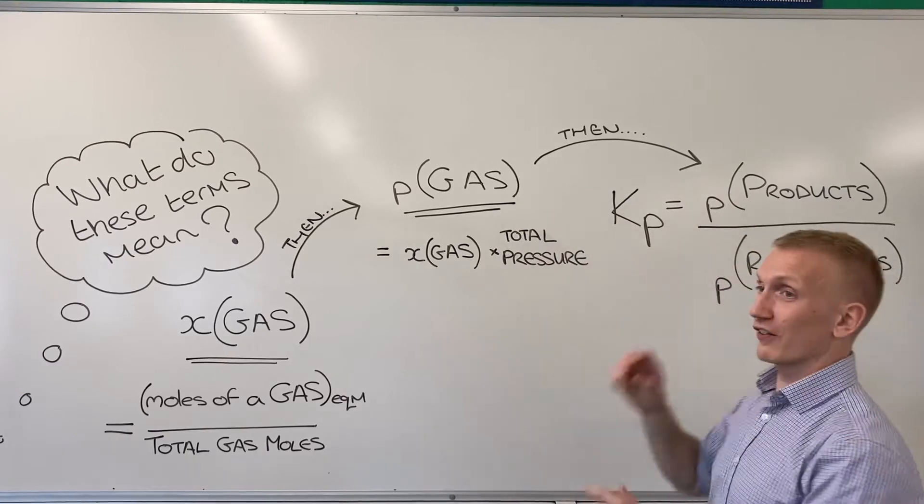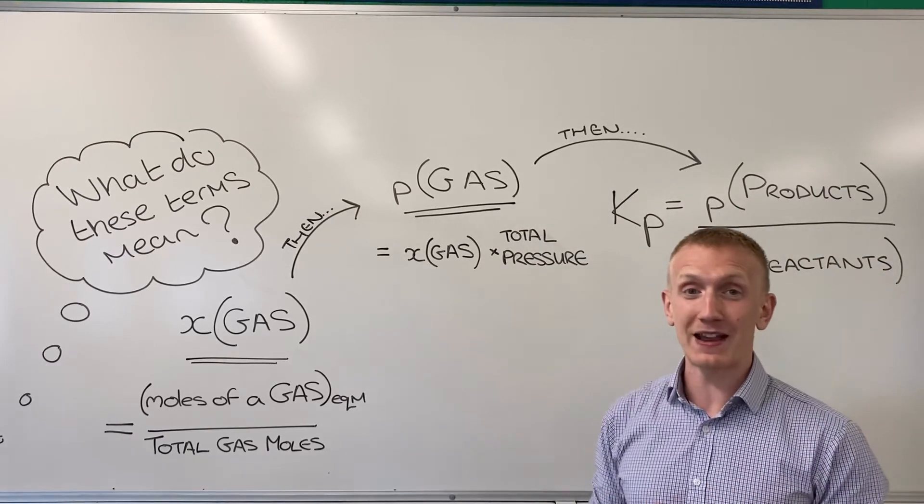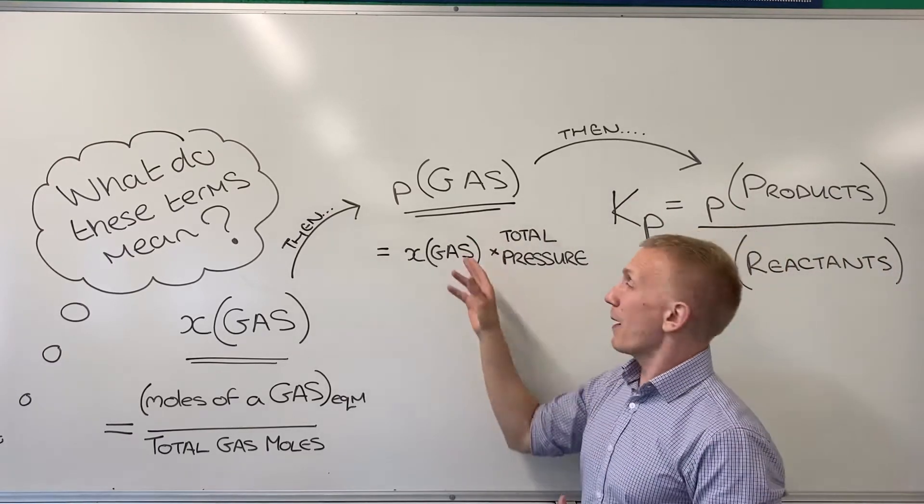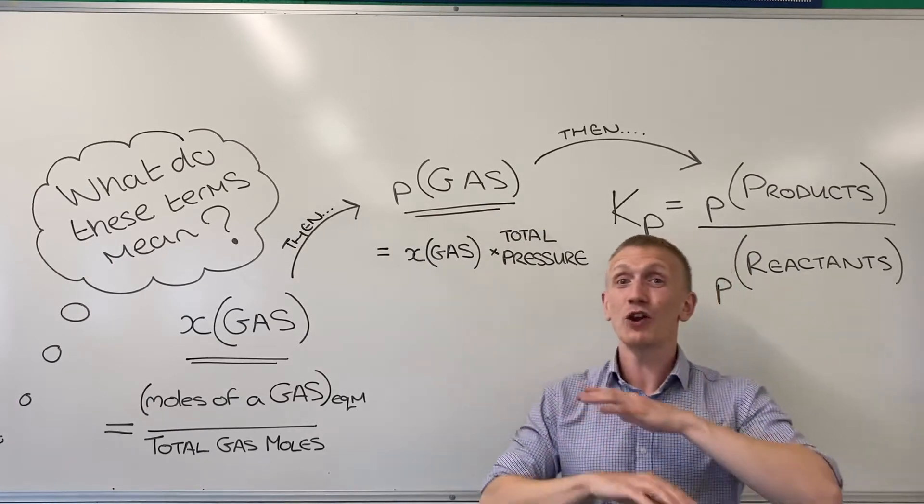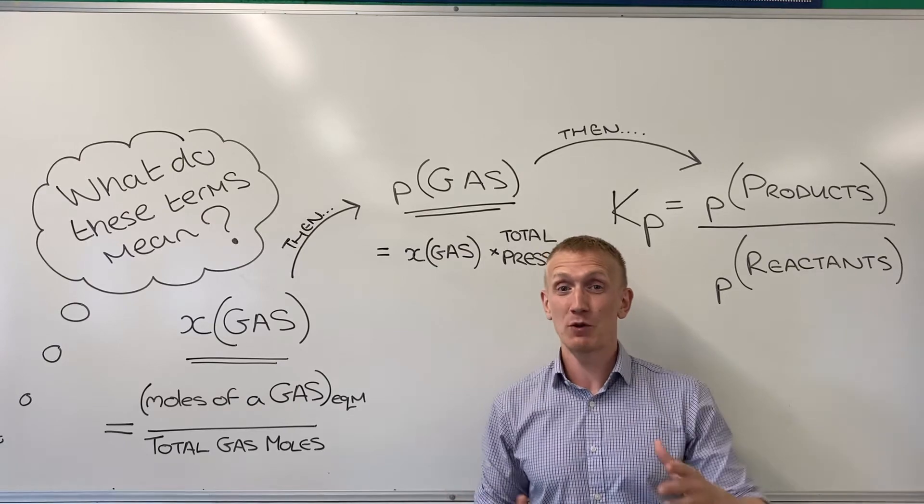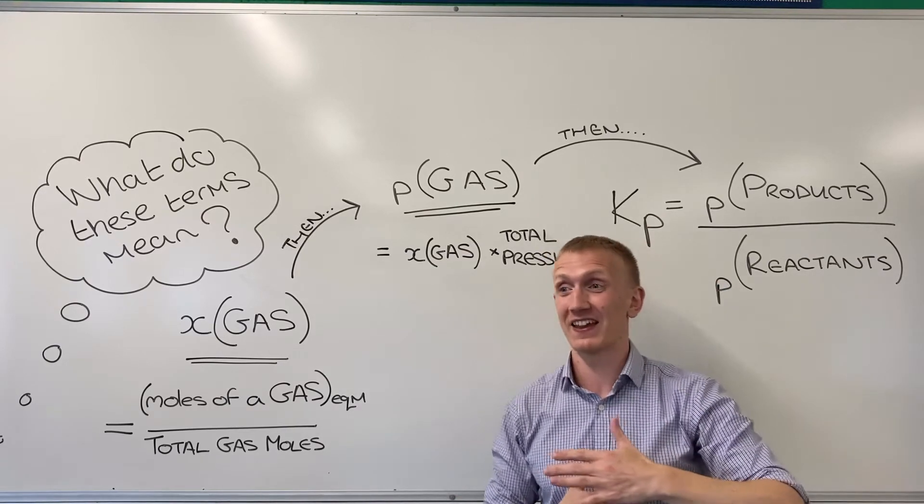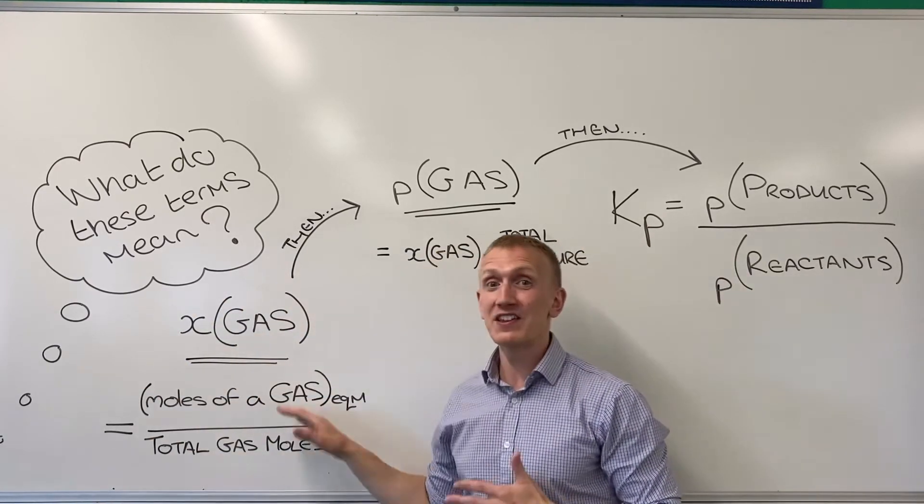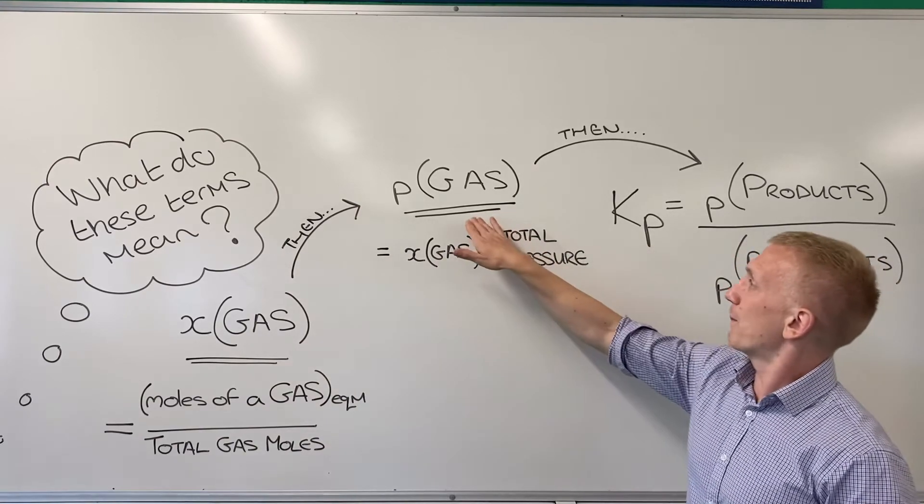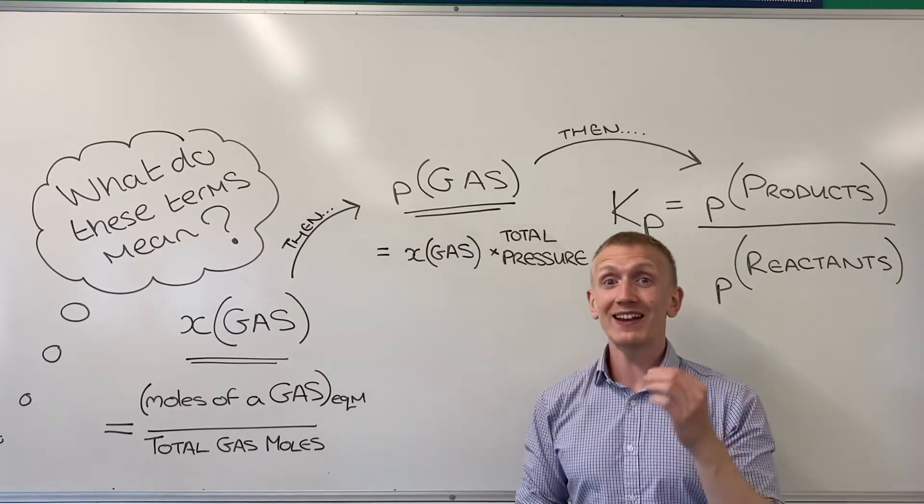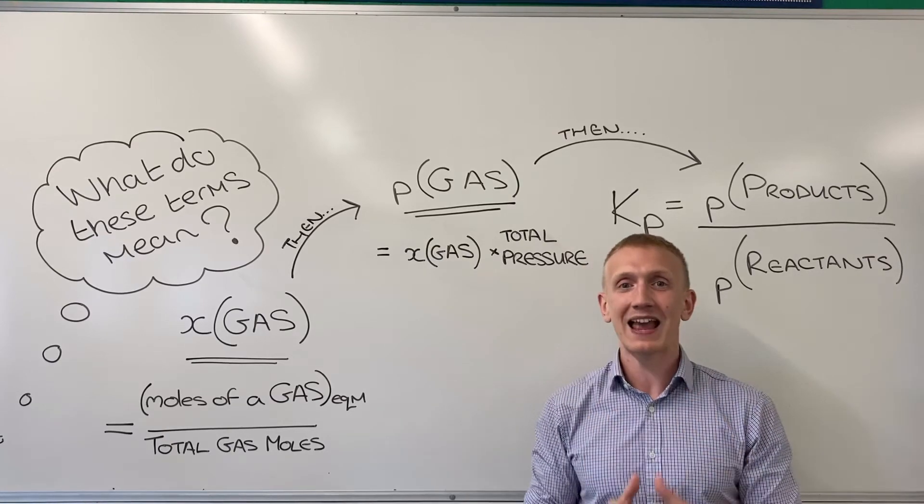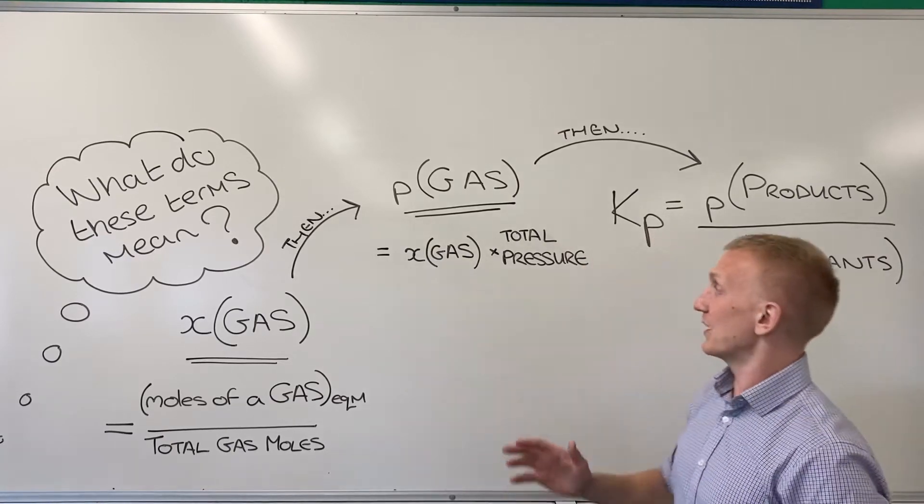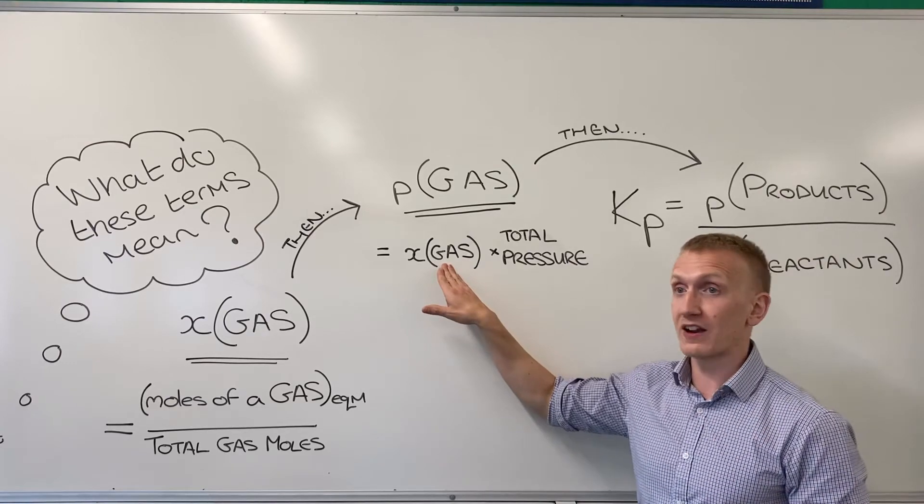Once you've got your mole fractions, which would be x of whatever the gas is, like x of CO2, you're ready to find out the p of CO2 because that would be the partial pressure. And when you've got all your partial pressures you're ready to jump into the Kp expression. Your partial pressure step is easier to calculate, but leave yourself loads of space in the exam. You often get a full page for this kind of thing because this takes up more space than you expect.